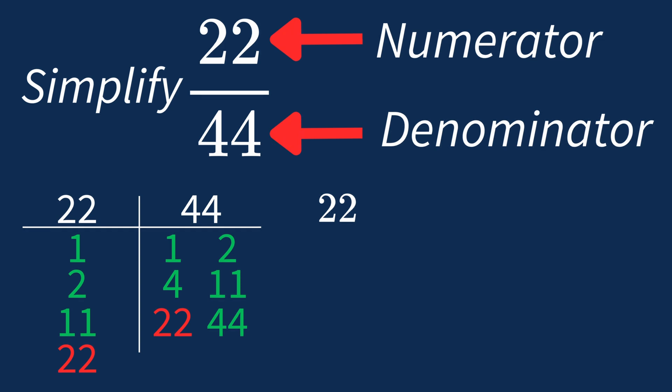Dividing the numerator 22 by 22 gives us 1. Dividing the denominator 44 by 22 gives us 2, since 44 divided by 22 is 2.